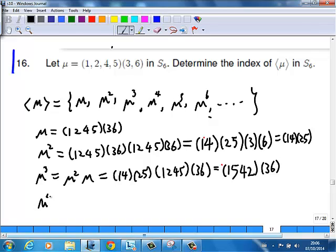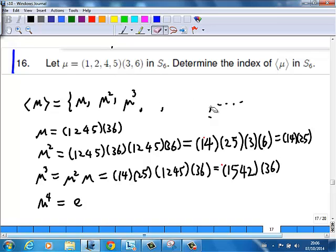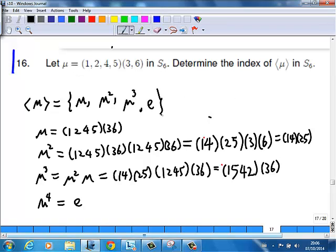And μ⁴, just tell your answer straight away, it's just E. So actually, the subgroup generated by μ is actually this one: μ, μ², μ³, E. First afterward we get μ and μ², μ³.